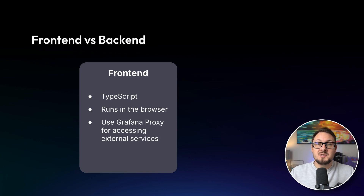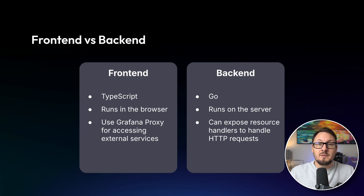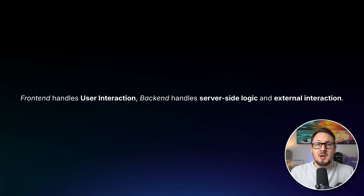You can find more information on the proxy in our developer documentation. Back-end components of a plugin are written using Go, and this code executes on the server side. Since the code is running on the server, you can expose resource handler endpoints which can serve data to your front-end. These are useful when you want to perform some server-side functionality, such as making an authenticated call-out to a third-party service and returning the data. In order to support alerting in your data source plugin, you must create a back-end data source. The key takeaway here is that front-end components manage user interaction, while back-end components handle server-side logic and external interactions.